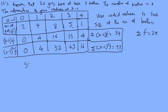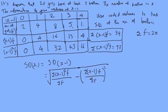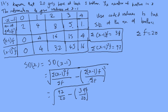The standard deviation of x equals the standard deviation of the coded data, so it's the square root of: sum of (x minus 1) squared times f over sum of f, minus (sum of (x minus 1) times f over sum of f) squared. That's the square root of 97 over 20, minus (39 over 20) squared, which gives 1.023.